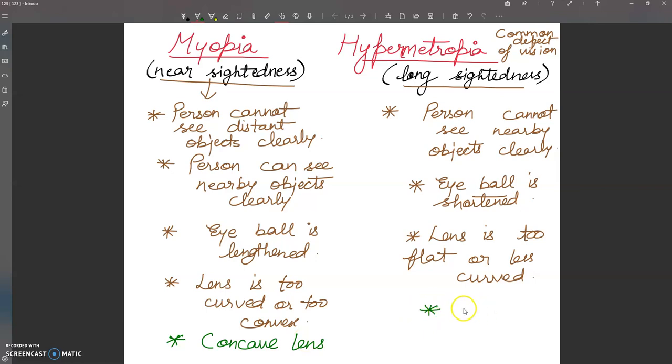For hypermetropia, we use a bi-convex lens to converge the rays.